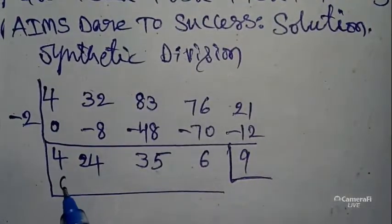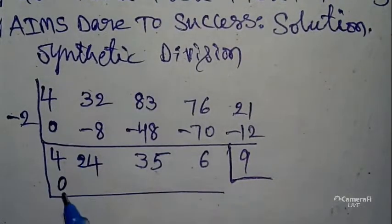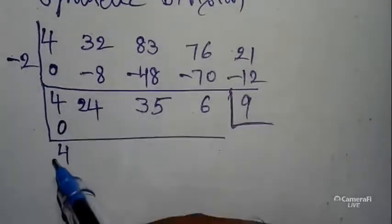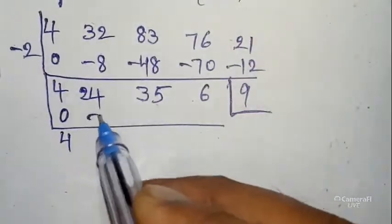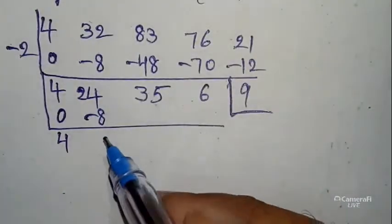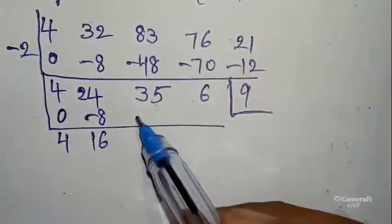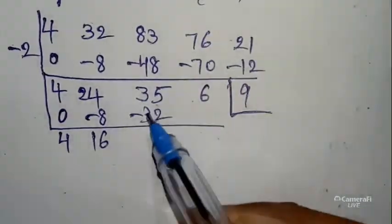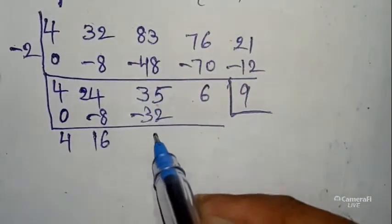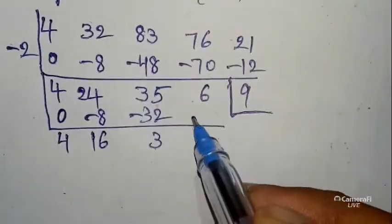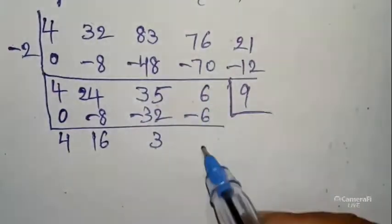Keep like this, take one more box. Keep 0, first value 0 + 4 = 4. 4 × -2 = -8. 24 - 8 = 16. 16 × -2 = -32. 35 - 32 = 3. 3 × -2 = -6. 6 - 6 = 0.